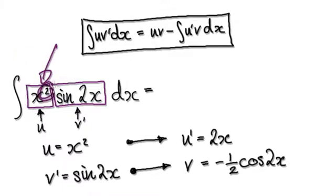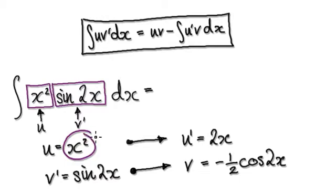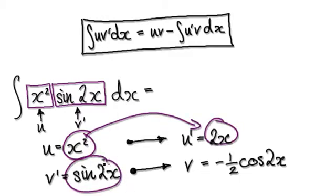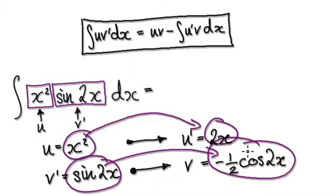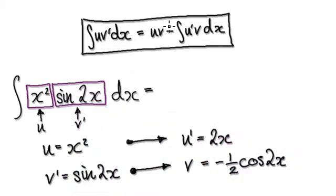So because of this bit here, we're going to need to repeat integration by parts twice. So if u equals this, then u' equals this. If v' equals this, then when you integrate it, it will give you this.